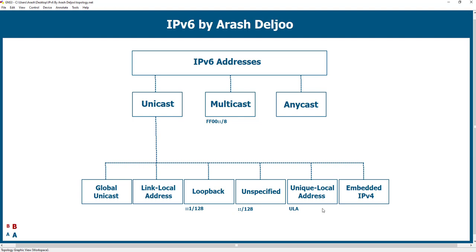The reason Unique Local Addresses were created is not the shortage of IPv6 addresses — we don't have any shortage in the IPv6 world. The reason ULA was created is for control and security. We can use this range for more control over communication between the inside and outside of our network. This is different from RFC 1918 in IPv4, where the reason was the shortage of IPv4 addresses.